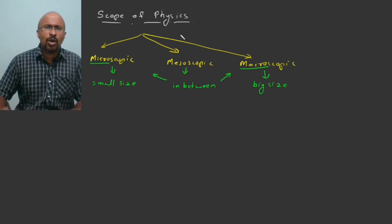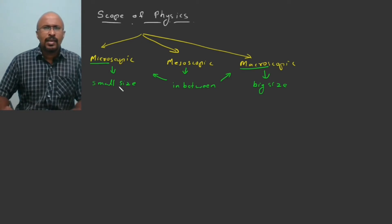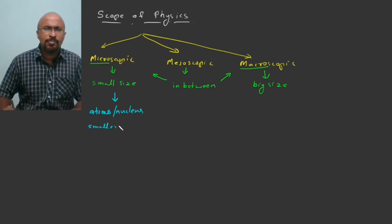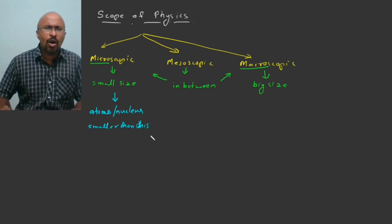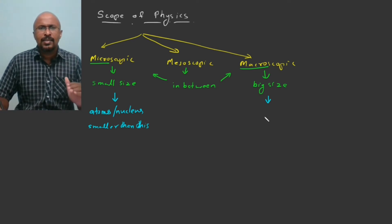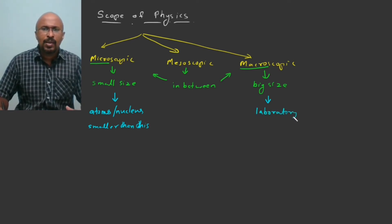Small size in the microscopic domain means objects of the order of atoms, nucleus, or smaller than that. The macroscopic domain deals with objects of a size we can see with our eyes or above — at laboratory scale, terrestrial scale, or even astronomical scale.